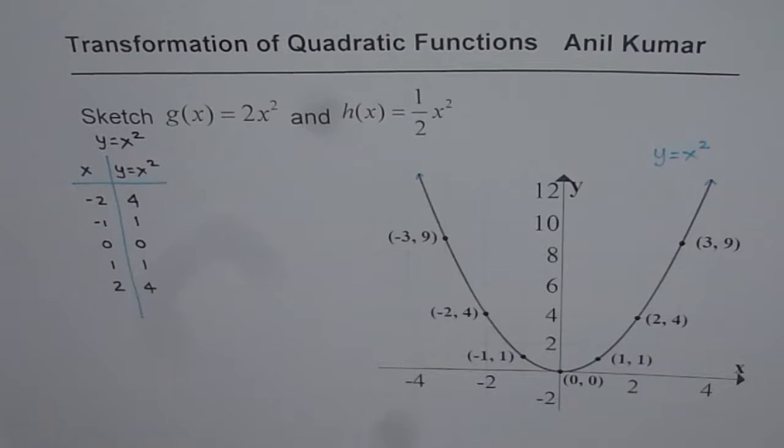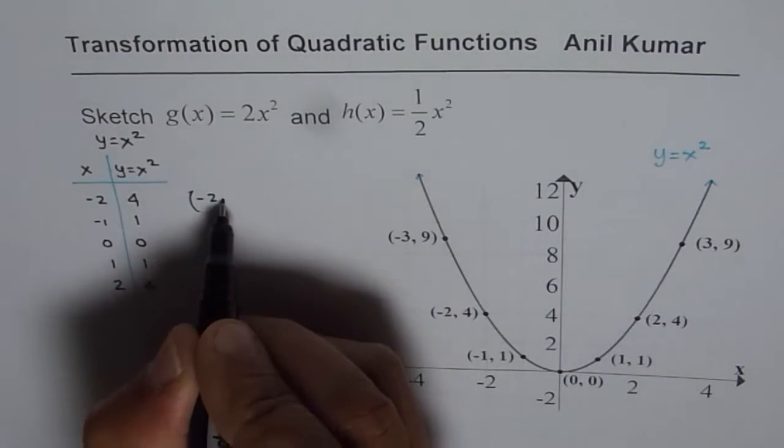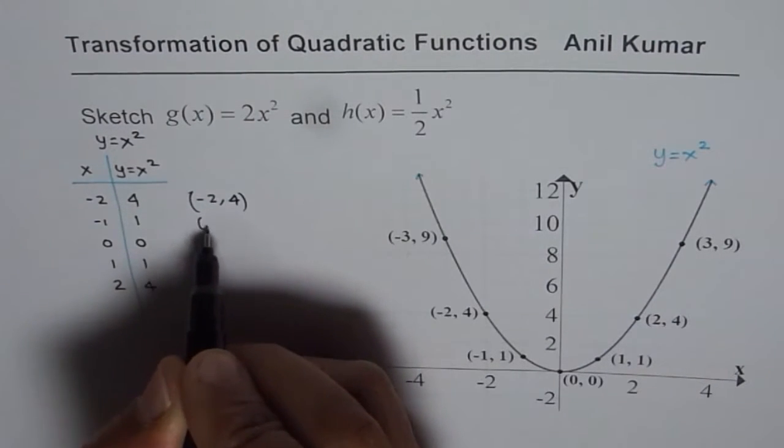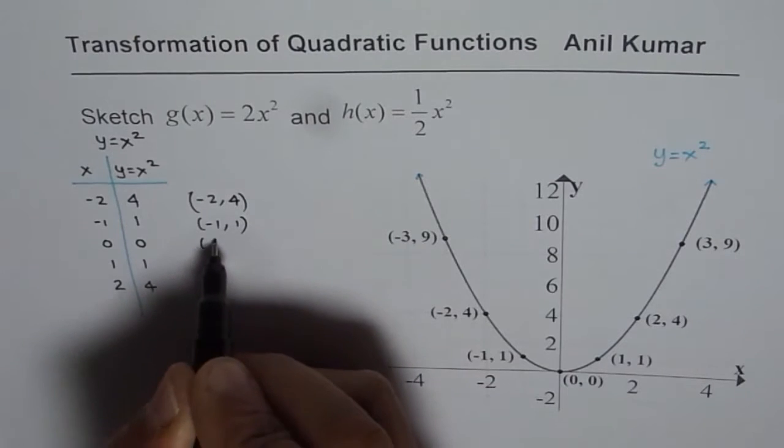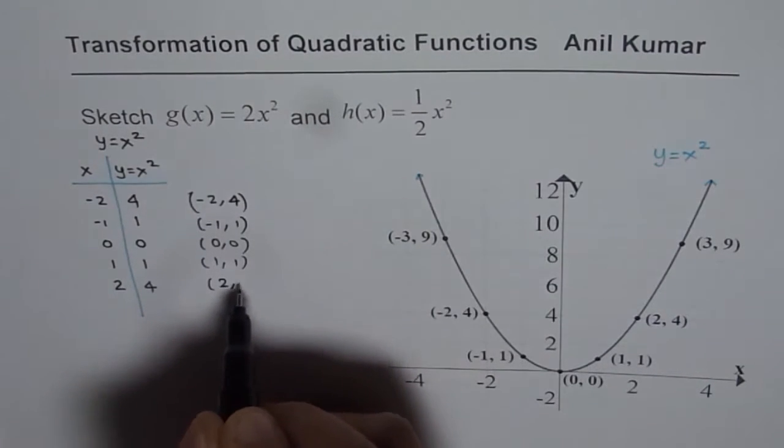So we get set of five points. These five points are: the first one is minus 2, 4. Then we have minus 1, 1, 0, 0, 1, 1 and 2, 4.